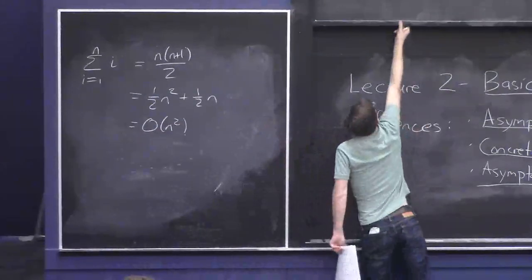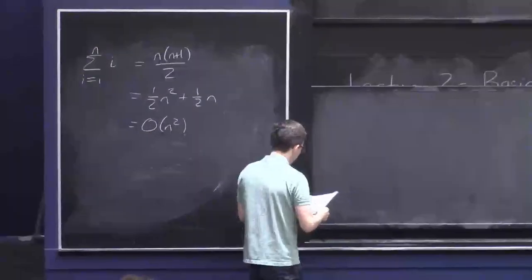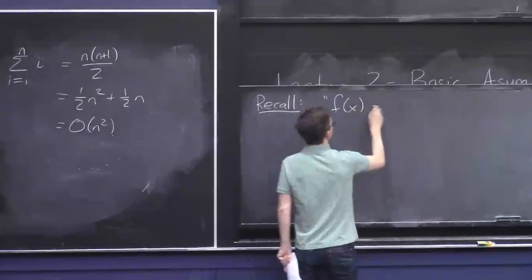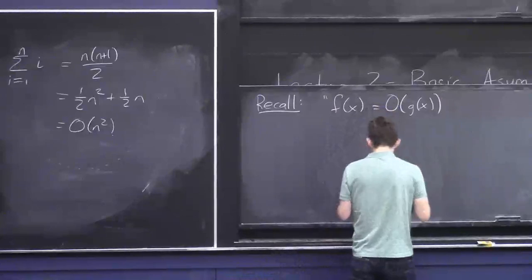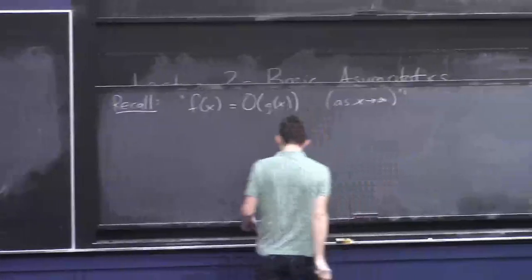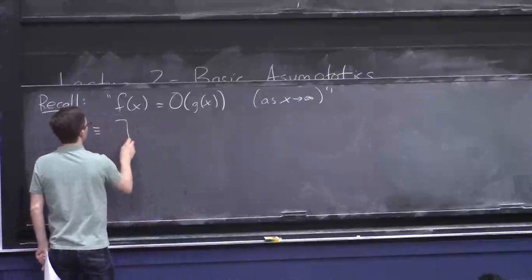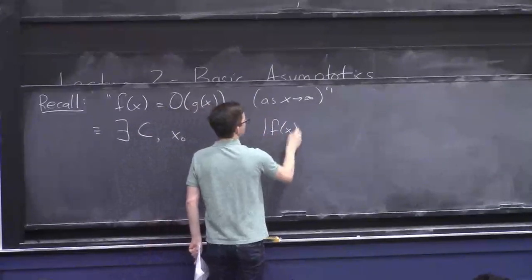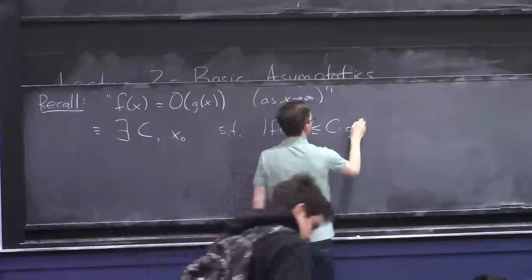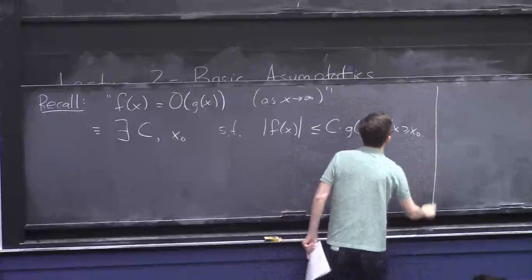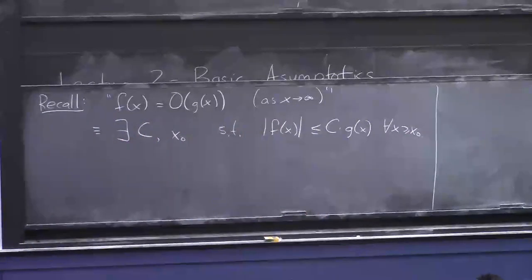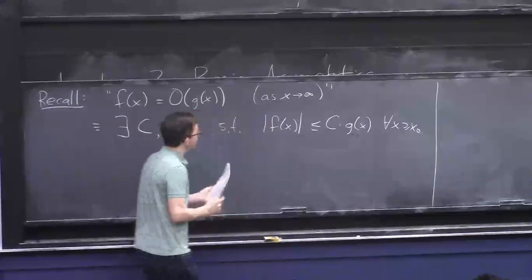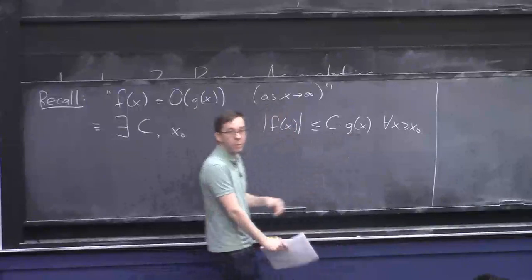Let me remind you of the basic definition. Recall, if you say that a function f(x) is order g(x) — and we should really add 'as x goes to infinity' — this means there exists some big constant C and some other big constant x₀ such that f(x) is at most C times g(x) for all x bigger than x₀. Here 'st' stands for 'such that.' Usually g(x) is a simpler function, and this says that eventually, for large enough x, f(x) is basically no bigger than g(x), up to a constant factor C.